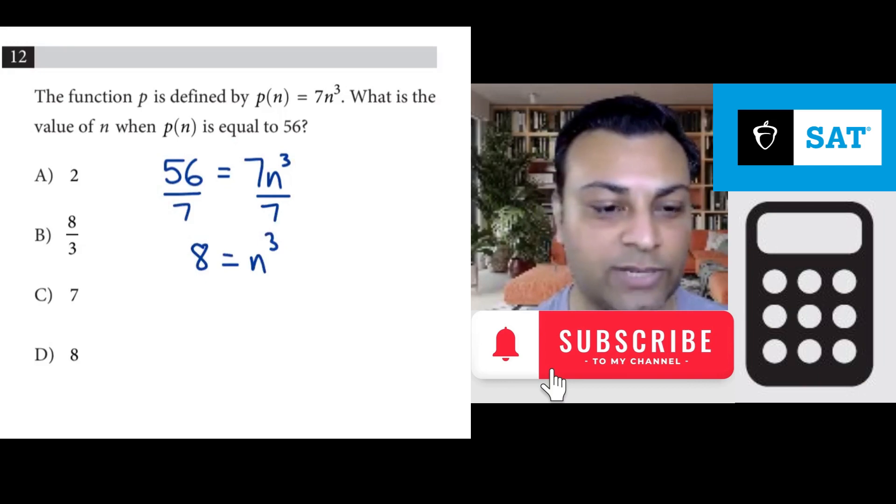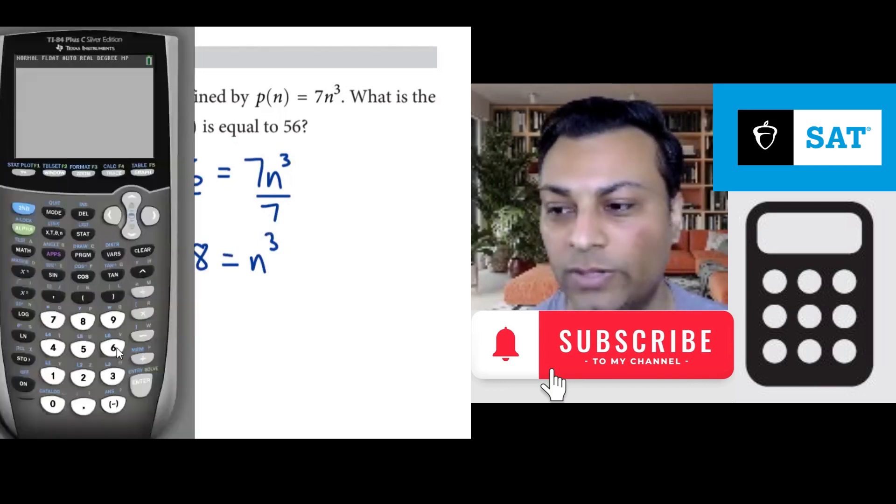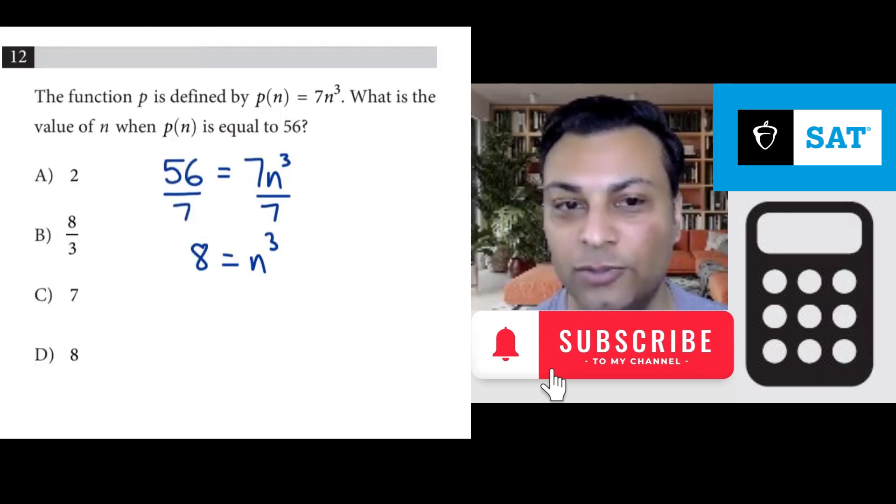Let's verify that with the calculator. 56 divided by 7 is 8. So finally you have 8 = n³.